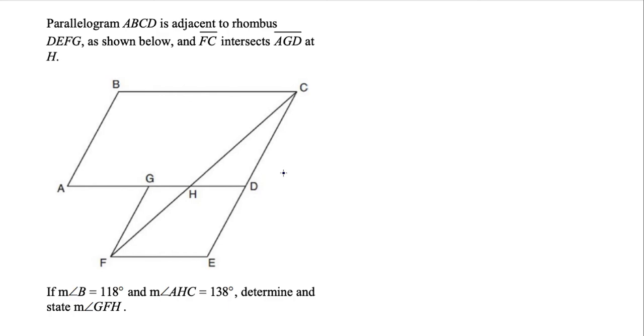All right, so the last one here is a bit of a beast, but we have a parallelogram and a rhombus adjacent to each other. And what we have so far is the measure of angle B is 118 degrees. We also have here the measure of angle AHC is 138 degrees. So with this, we have to determine and state the measure of angle GFH, which is this angle down here, which I'll label with an x.